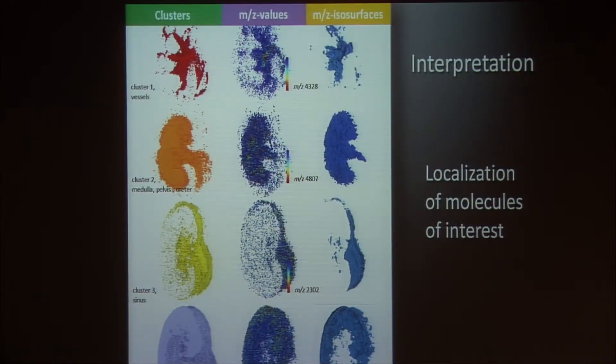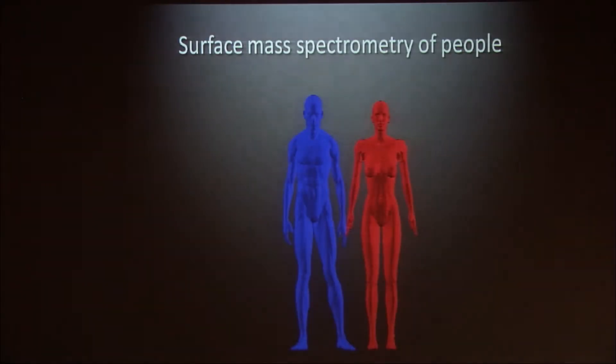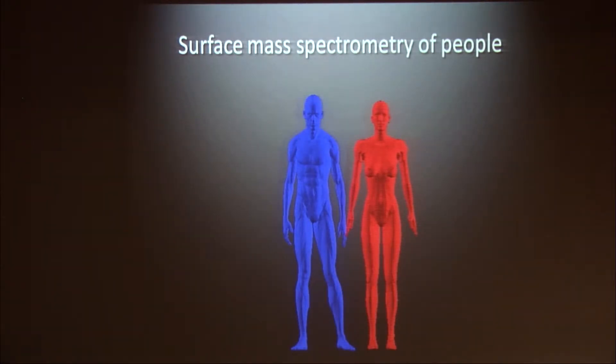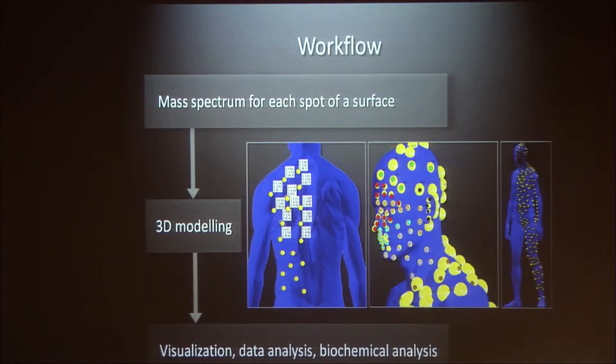The ultimate question is not the spatial segmentation or nice images, but where exactly are the molecules which are of interest to us. Now I would like to switch gears and talk about a new technique we are developing with Peter Dorenstein, which we call surface mass spectrometry. The aim of this project is to understand the localization of various molecules — from metabolites to proteins — on the human skin. We collected mass spectra for all possible spots of the skin and performed 3D modeling, visualization, data analysis, to be followed up with biochemical analysis.